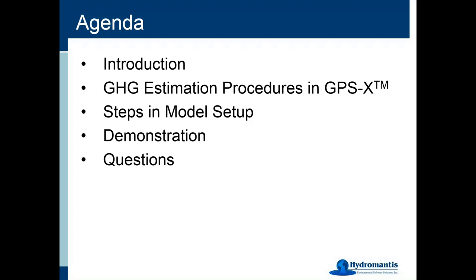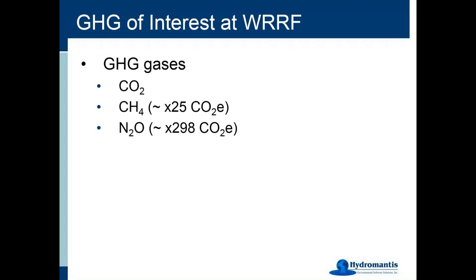The greenhouse gases of interest to us at water resource recovery facilities are carbon dioxide, methane gas produced under anaerobic conditions, and nitrous oxide produced during nitrification and denitrification in biological reactors. Methane and nitrous oxide are of primary importance because of their greenhouse intensity: methane is about 25 times that of CO2, and nitrous oxide is about 298 times — so producing one gram of nitrous oxide is equivalent to 298 grams of CO2.